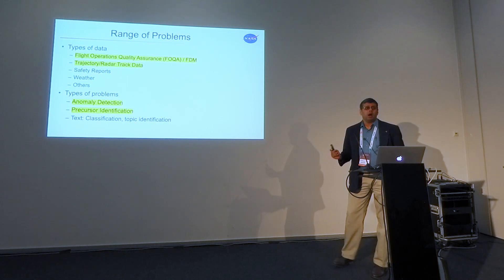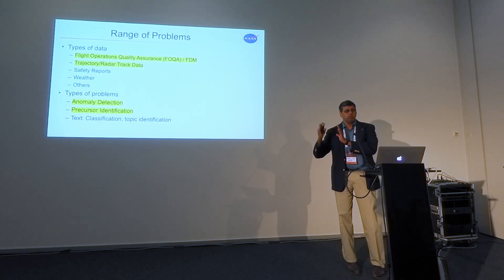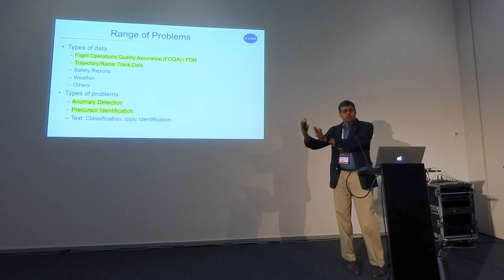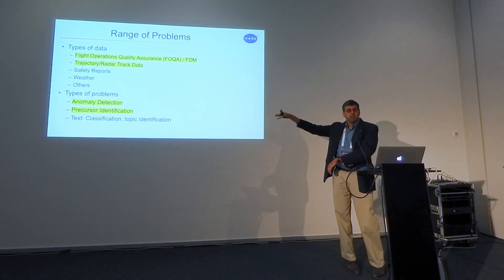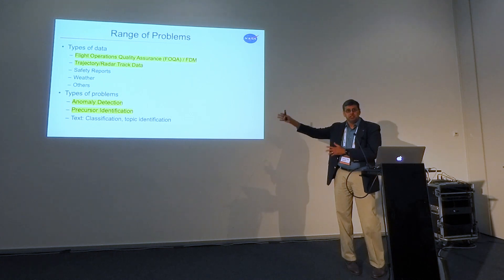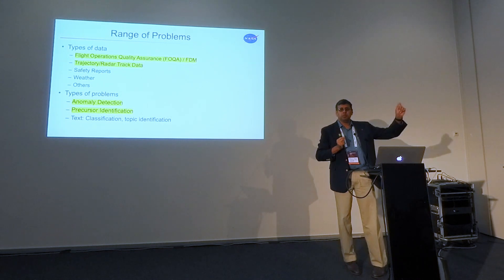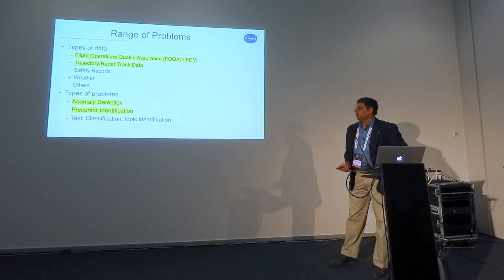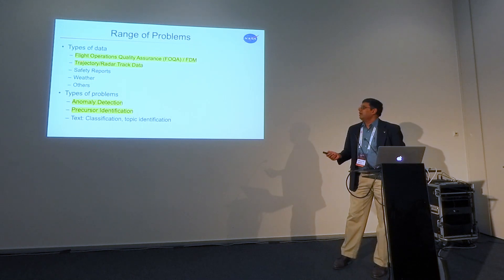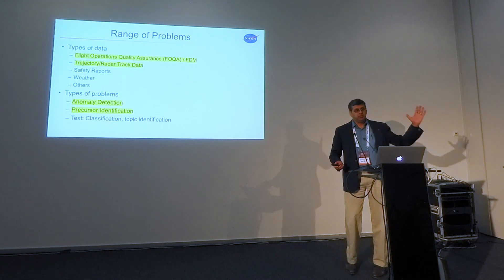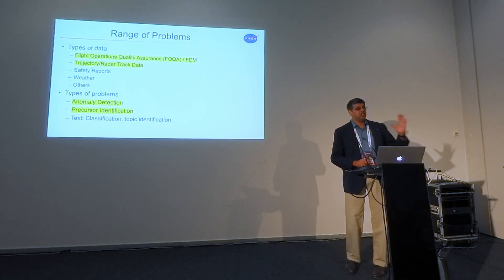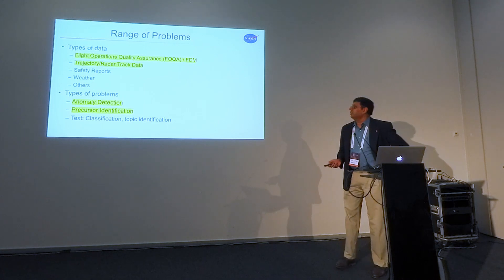The main types of problems we've been looking at are anomaly detection — looking for individual problems at a given point in time — and then precursor identification, where given some kind of a problem at the end, like an anomalous state or an incident, we want to find what are those precursors. What are the conditions under which you're more likely to have those downstream problems? We've also done some classification of aviation safety reports into pre-established types, and tried to find key topics represented in large safety report repositories.